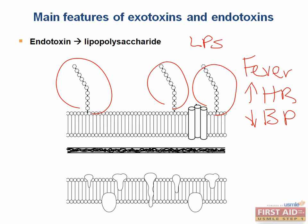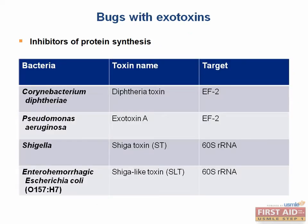Just got another question right. More on exotoxins on the next slide. Let's start with a bacteria whose exotoxin acts by inhibiting protein synthesis. Corynebacterium diphtheriae produces an exotoxin known as the ADP-ribosylating AB toxin.